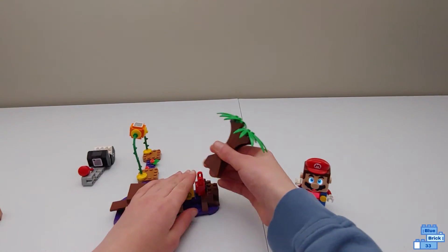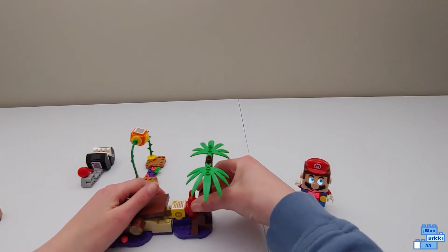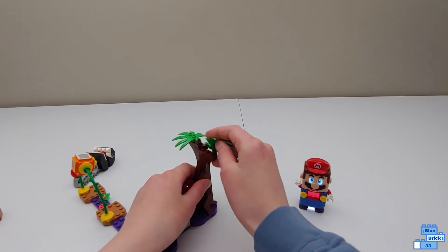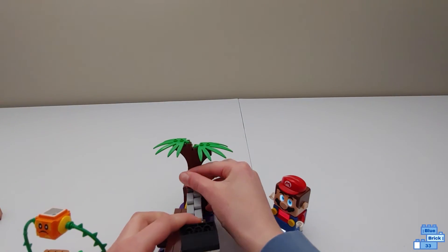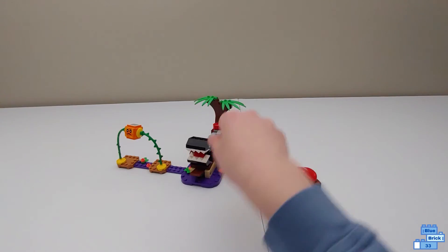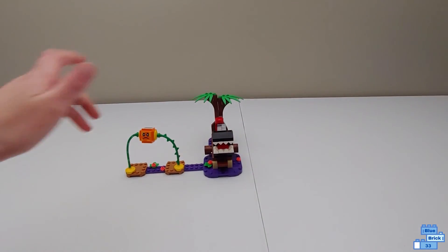And then there is this cool tree in the back, just with like two things here. And then this is the set, we can just put the Chain Chomp back right here. So, you know, that's it.